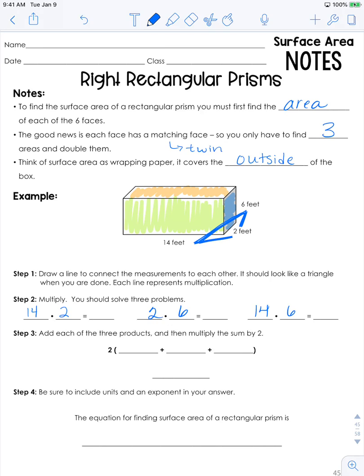So we are going to say, 14 times 2 is 28, 2 times 6 is 12, and then we have 14 times 6, which is going to be 84.